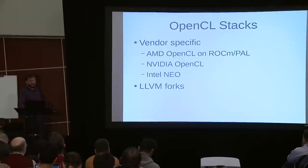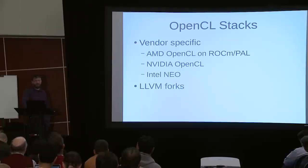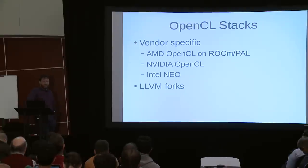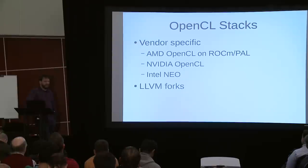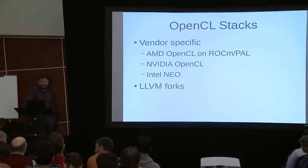OpenCL stacks are very vendor-specific. AMD has one or two, NVIDIA has one, and Intel has recently released a Neo OpenCL stack open source. Some are open source, some closed source, but a lot of them have forked LLVM and Clang. They're not upstreaming those things — there are big chunks of new Clang code that aren't upstream. They're difficult to deploy because you have to pick which one you want, and you have to spend your time making that work on your system.